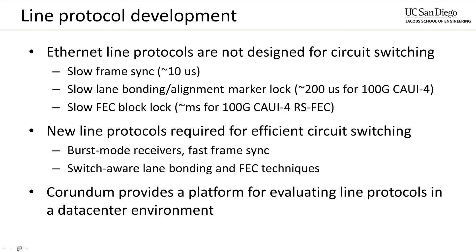An additional consideration for operation with an optical switch is the physical layer line protocol. Current Ethernet line protocols are not designed with circuit switching in mind. As a result, it can take quite a long time for a link to recover after an interruption. For 10G and 25G links without FEC, only clock data recovery and frame sync are required, which generally takes around 10 or 20 microseconds. For 40G and 100G links, lane bonding is required, and it takes around 200 microseconds for a 100G link to obtain alignment marker lock across all 20 virtual lanes. When forward error correction is used, the situation is even worse — achieving FEC block lock on a 100G link takes on the order of milliseconds. For efficient operation in a circuit switched environment, the line protocols need to be revisited. Otherwise, the speed of a fast optical switch is wasted on guard delays.